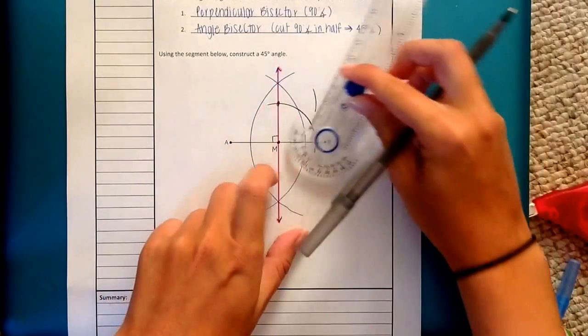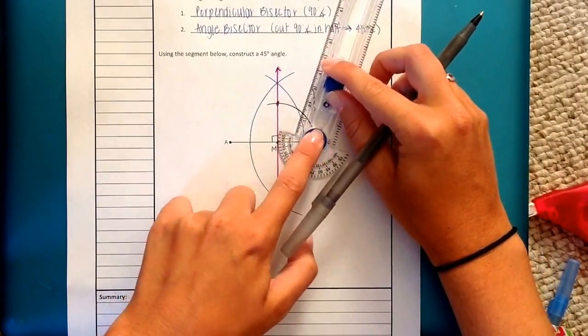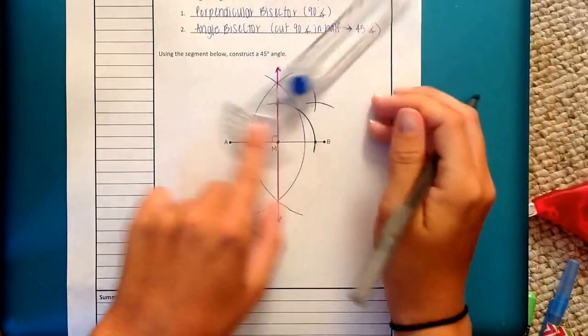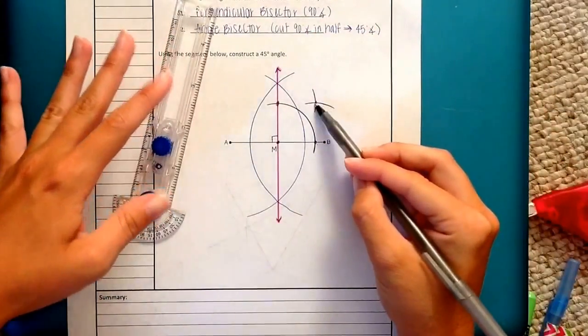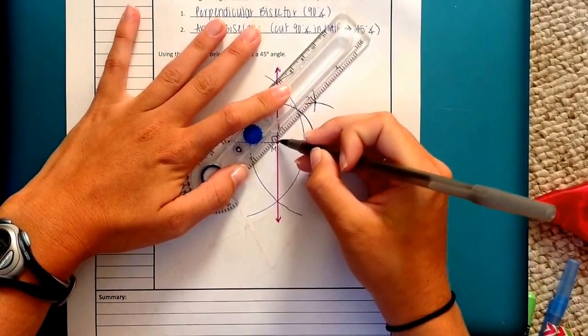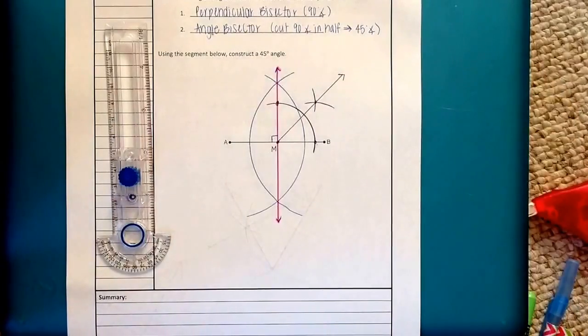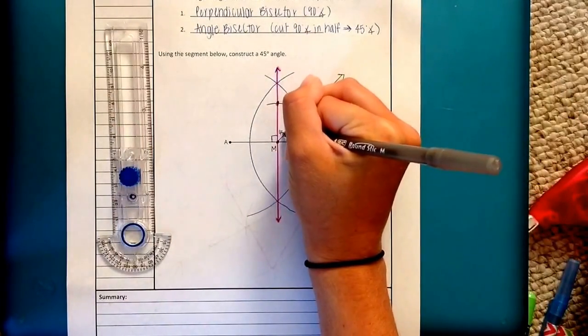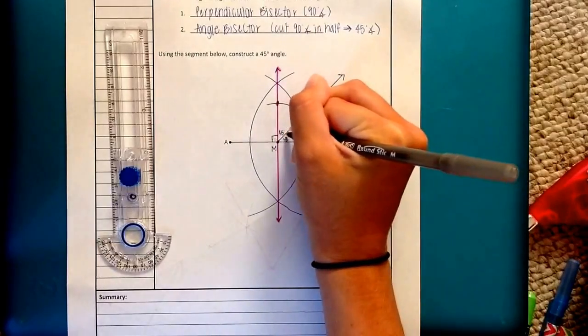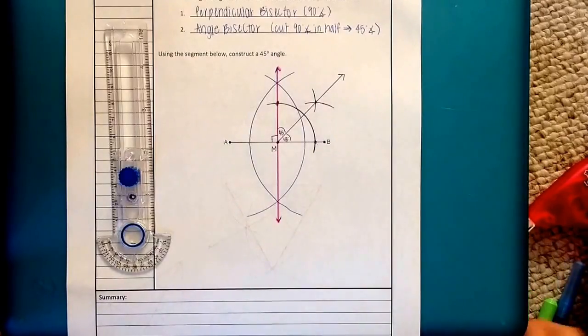Do it from one point now, do it from the other. Keeping the radius the same in this entire construction. There's my point of intersection and my last and final step is to connect through from M through the baby arcs. So what we just created was a 45 degree angle here and 45 degree angle here. I'm going to put one arc mark on each to indicate that they are congruent or the same or equal to one another.